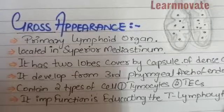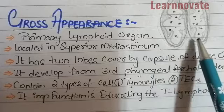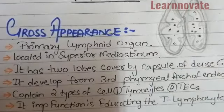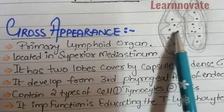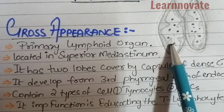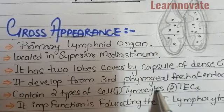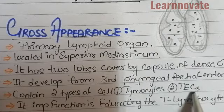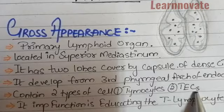It developed from the third pharyngeal pouch of the endoderm. The thymus contains two types of cells: the thymocytes, which are the cells of the thymus, and the TECs — the thymic epithelial cells. The TECs are very important cells that we will discuss in the histological features section.